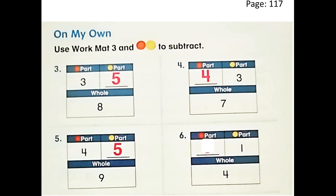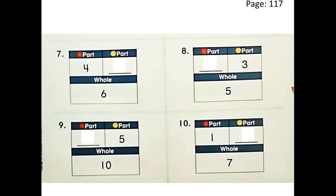Great, grade 1! Excellent! Let's see the next problem. We have 4 counters in all. The first part is 1. What's the second part? You can put 1 in your head and count up to 4: 1 in your head, then 2, 3, 4. We need 3 red counters in the second part. Great job, grade 1! Now try to solve the next problems by yourself — stop the video, try to solve them, and then check your answers here.